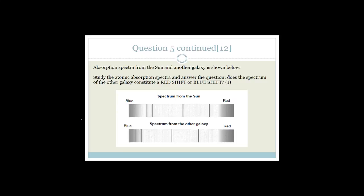Why do they say 'expanding universe'? Because no matter which direction we look, we always see this redshift — those stars are all moving away from us. Therefore, we say there's an expanding universe. Next, it says absorption spectra from the sun and another galaxy is shown. Study the spectra and answer: does the spectrum of the other galaxy constitute a redshift or a blueshift? Looking at the diagram, the lines in the other galaxy have shifted closer to the blue side. So obviously, the spectrum has shifted to the blue side — it's a blueshift.